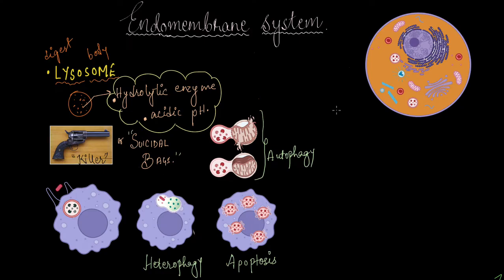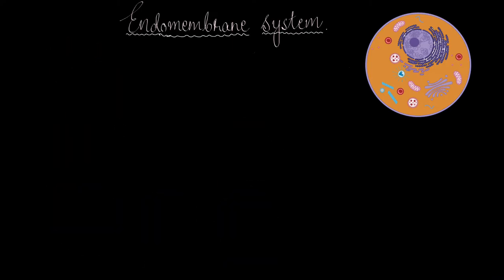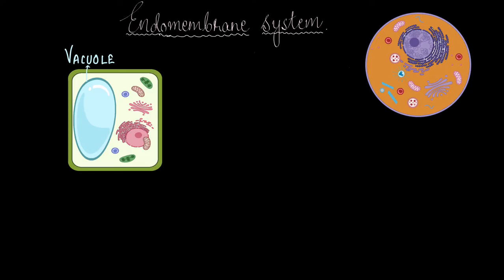Now let's move on to the last organelle of the endomembrane system, which is the vacuole. Now on your screen is a plant cell, and the big blue thing that you see inside is the vacuole.